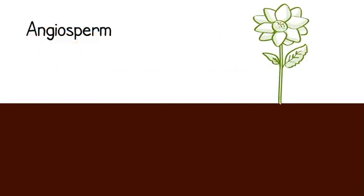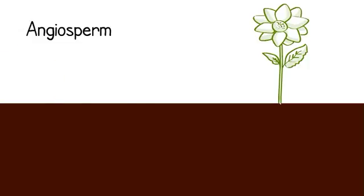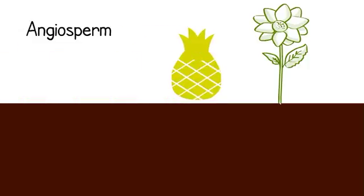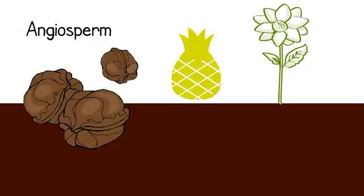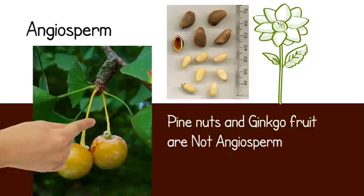The last type is angiosperm, meaning new seeds. What makes these different than gymnosperms is that their seeds are covered. One way that angiosperm seeds can be covered is fruit. In fact, when you're eating fruit, you're eating an angiosperm's ovule. Other things that can cover their seeds are nuts, legumes, and berries. Exceptions to fruit and nuts are pine nuts and ginkgo trees.